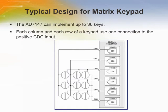The AD7147 can be used to implement a matrix keypad with up to 36 keys. The keys are arranged in rows and columns, similar to a standard matrix keypad. One half of the keys is connected to the column input line and the other half to the row input line. Each column and each row of a keypad uses one connection to the positive CDC input. For matrix keypad operation, check the row and column status to find which key is active.